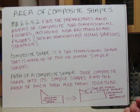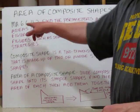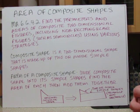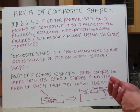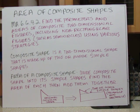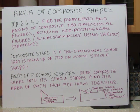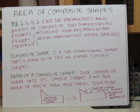I want to talk about area of composite shapes, dealing specifically with standard MA.6.G.4.2. We're talking about geometry — find the perimeters and areas of composite two-dimensional figures, including non-rectangular figures such as semicircles, using various strategies. I'm going to show you probably the most common strategy that I use, but if you have another one, by all means use it.